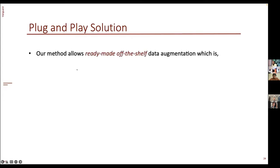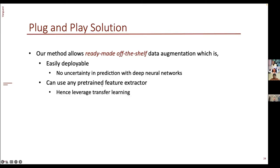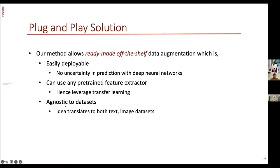This solution is a plug-and-play approach, allowing ready-made off-the-shelf data augmentation that is easily deployable because there's no deep neural network — and thus no uncertainty from neural network predictions. It can use any pre-trained feature extractor, enabling transfer learning from models trained on billions of images. It is also agnostic to dataset type, meaning the idea equally translates to both text and image datasets — establishing benchmarks for text is actually one of the future directions.